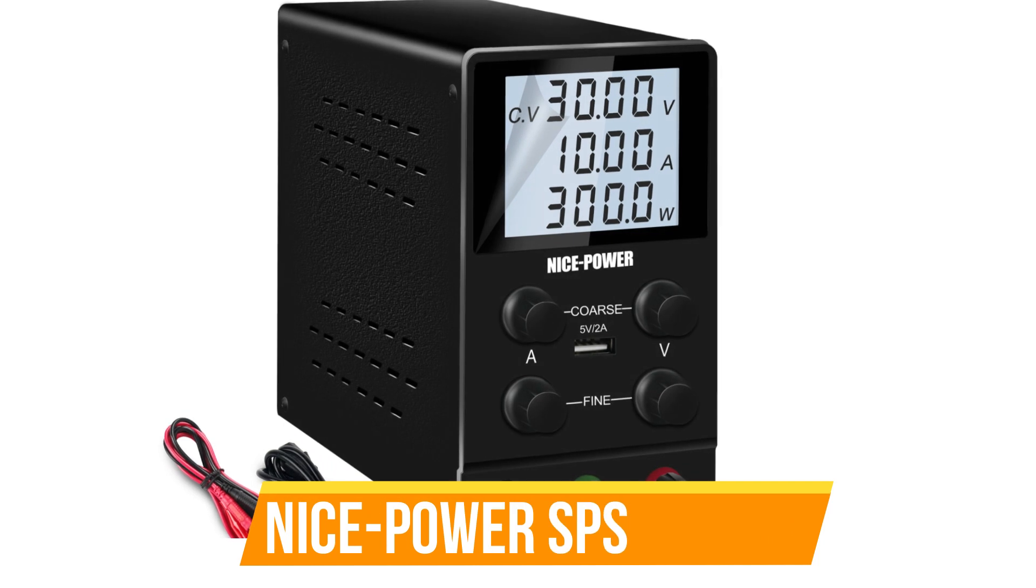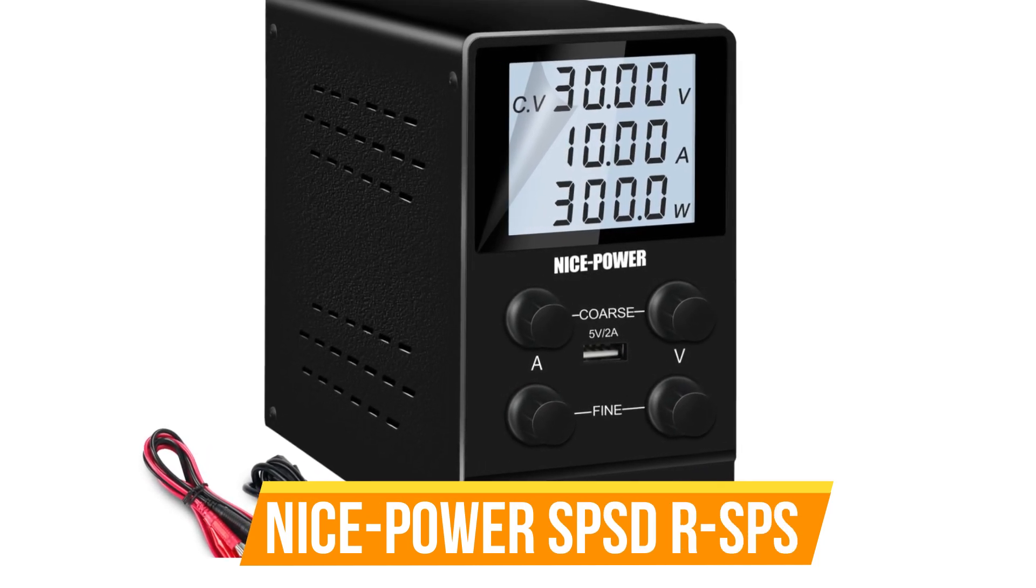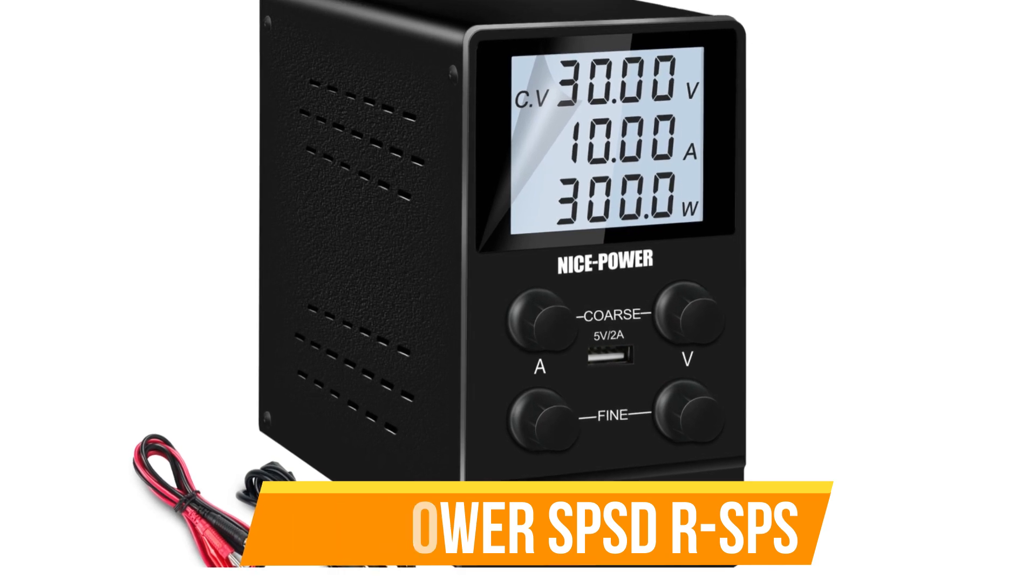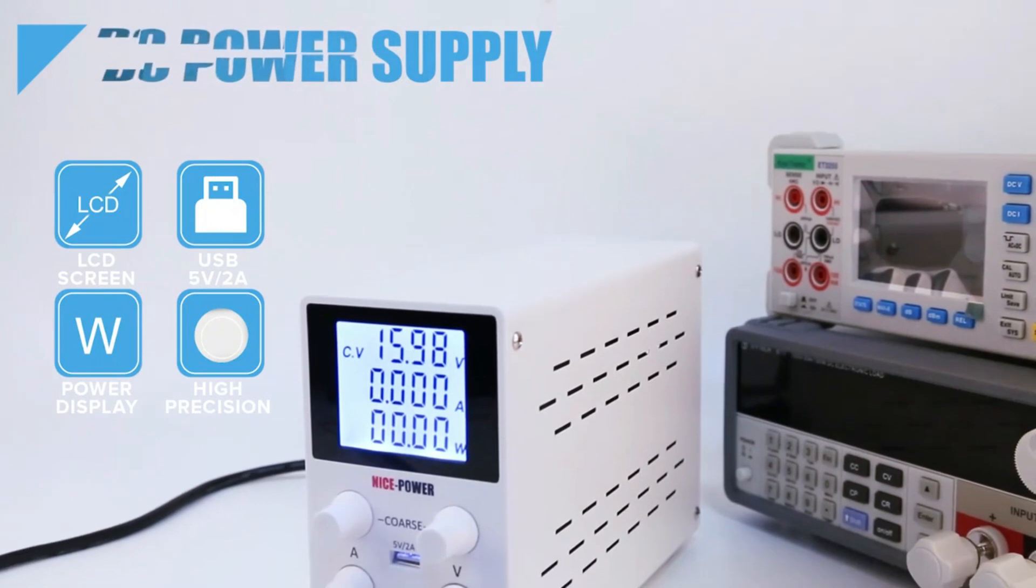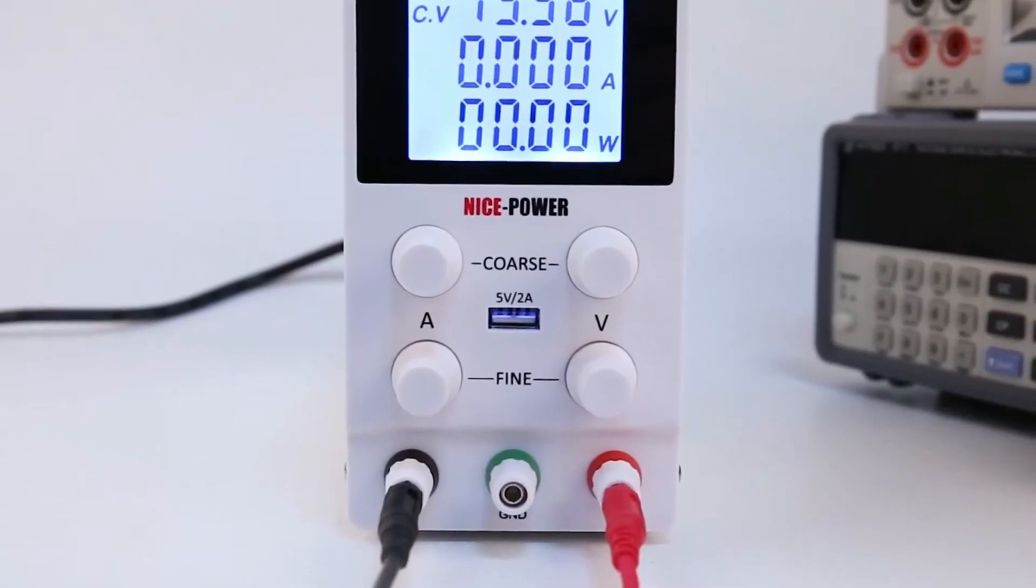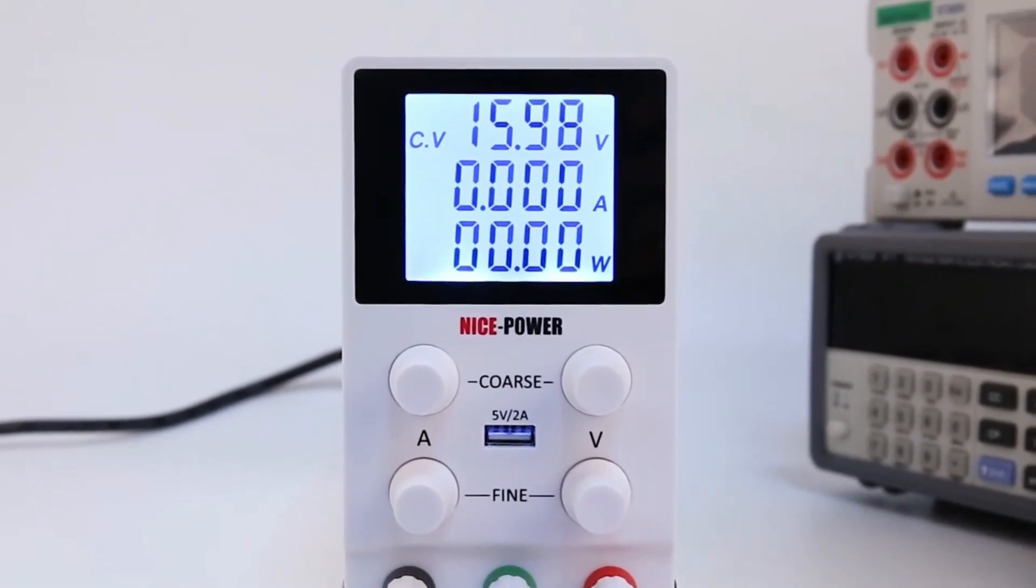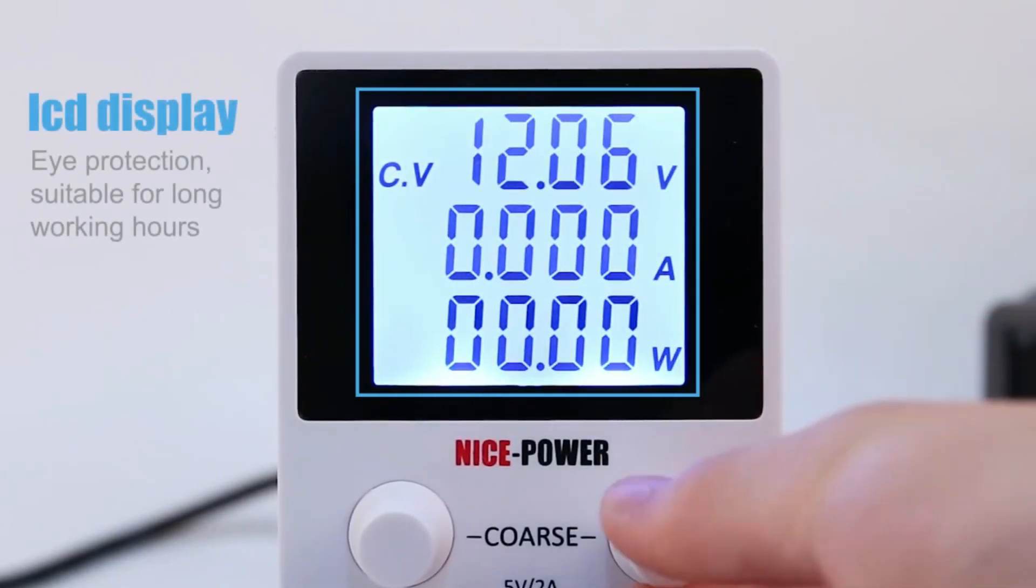Number 5: Nice Power SPSD RSPS DC Power Supply. The Nice Power SPSD RSPS DC Power Supply is a versatile and reliable power solution for various applications. It offers adjustable output voltage from 0 to 30V with output current from 0 to 10A, allowing for precise control and flexibility in electrical projects. With a maximum output power of 300W, it can handle demanding applications.